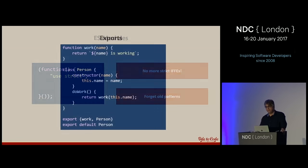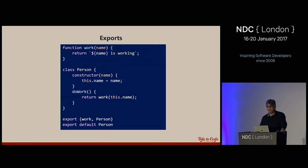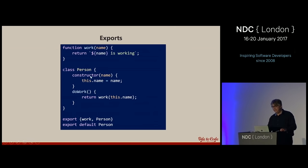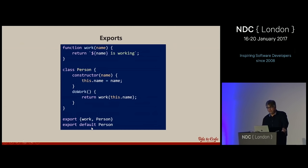Forget the old things you know and concentrate on what modules give you. Inside a .js file that is now a module, unless you explicitly write an export statement, symbols are hidden — implementation details that no one can access. At the bottom of the file you can export functions, classes, or variables. You can also have a default export, which means when someone imports it, they don't need curly braces — they just say 'import foo from bar' and get whatever the default export is.